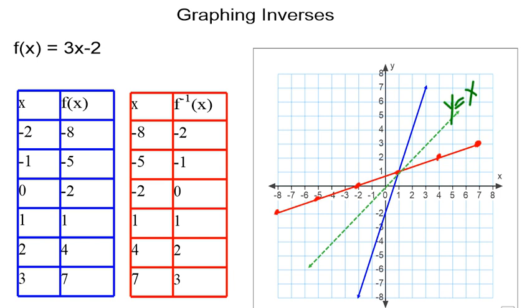The blue, as you remember, is the f(x) line, and the red is the f inverse of x line. What's the relationship between the blue and the red?